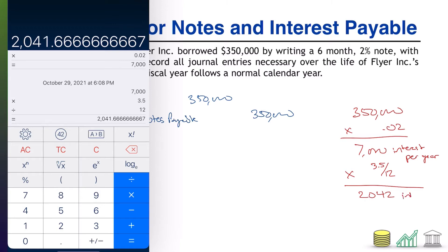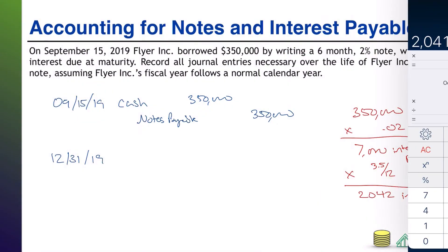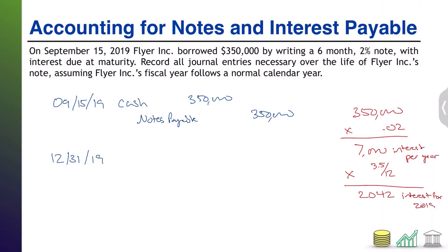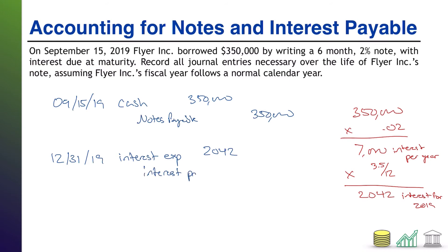And that is the interest for 2019. So for our journal entry, we are going to record interest expense — because we have incurred this cost in 2019 — for $2,042. We are not paying it that day; interest is due at maturity, so not until March 15th. So instead, we're going to record interest payable for $2,042, which we will then pay off when we finally get to March. So that is our December 31st adjusting entry.